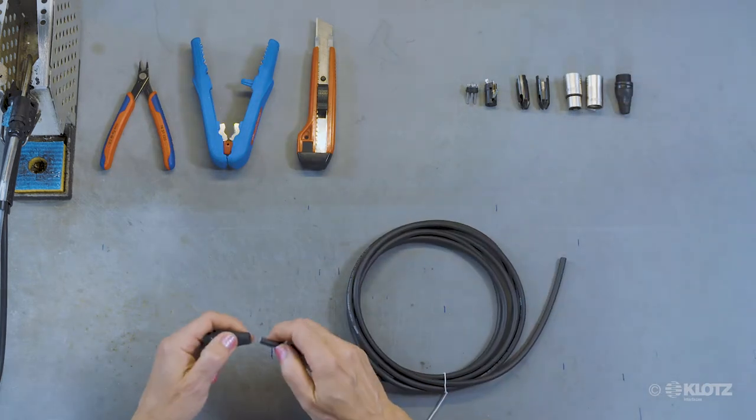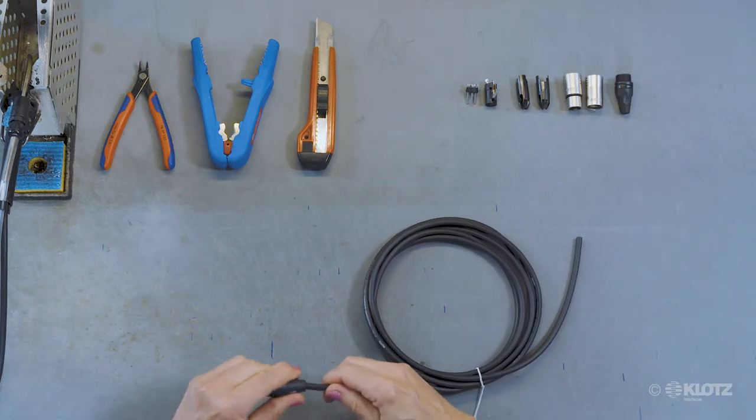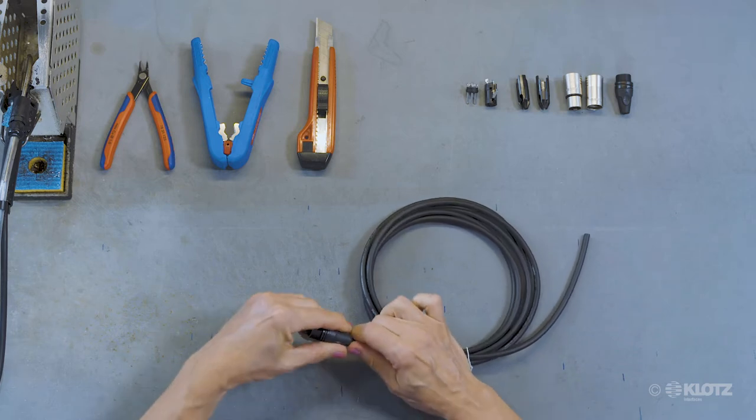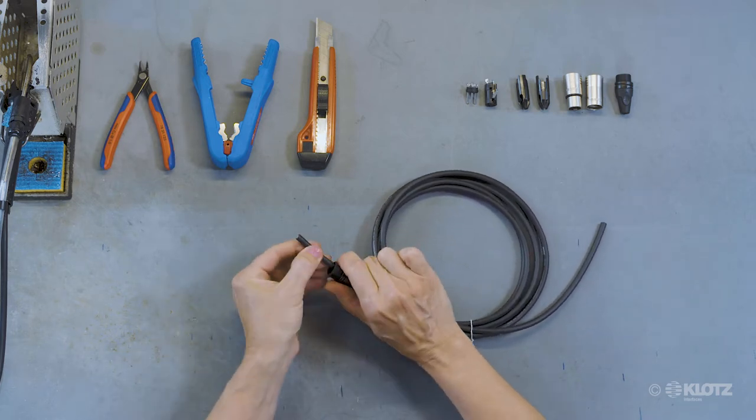To start your cable assembly, please cut the cable into your desired length and slide the boots onto the cable ends on each cable side.